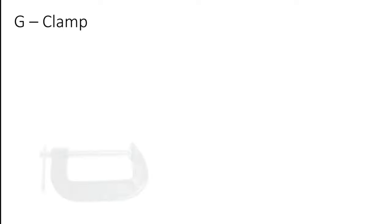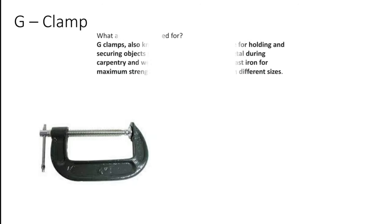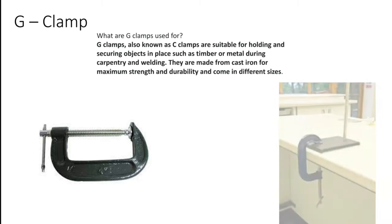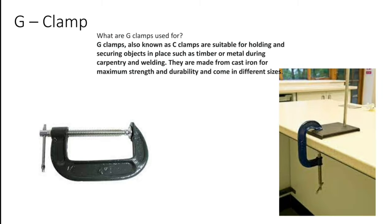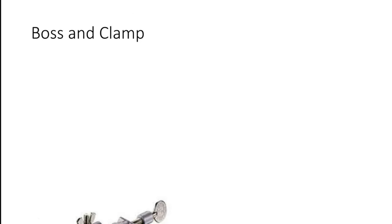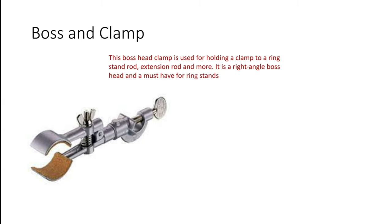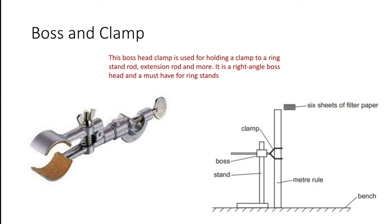This is a G-clamp, and this is the picture of G-clamp. G-clamps, also known as C-clamps, are suitable for holding and securing objects in place. In our physics lab, we use this to hold stand, boss, and clamp firmly on the table. What is boss and clamp? The boss head clamp is used for holding a clamp to a ring stand rod, extension rod, and more. It is a right-angle boss head and is a must-have for ring stands. This is one laboratory setup where we use boss and clamp.